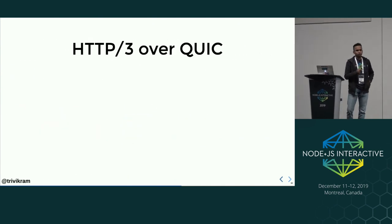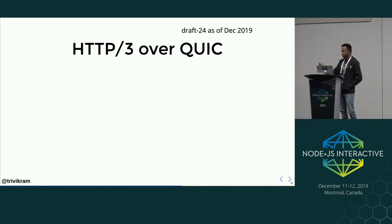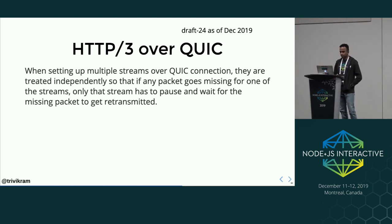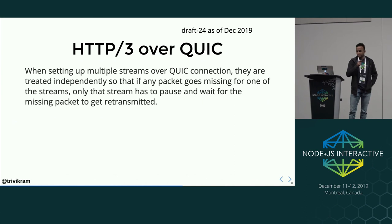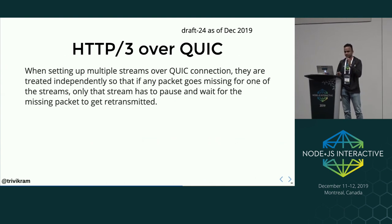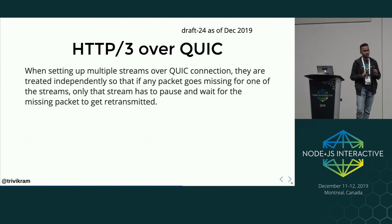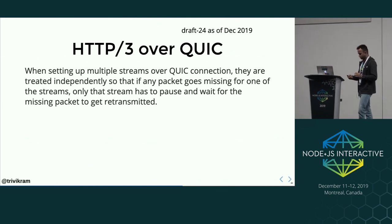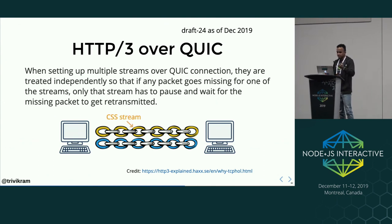What does HTTP/3 over QUIC do? This is draft 24 as of December 2019. When setting up multiple streams over a QUIC connection, they are treated independently. So if any packet goes missing in one stream, only that stream has to pause and wait for the missing packet to be retransmitted. In the chain analogy, if the JS stream packet is lost, the CSS stream is not affected.